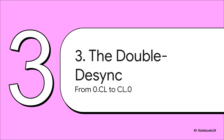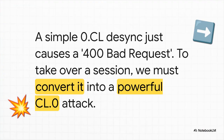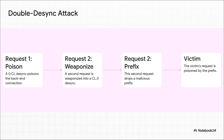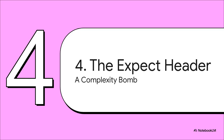Now we can actually trigger a 0.CL desync and we've got our proof of concept. But how do we make it do something evil? How do we go from just breaking things to actually hijacking a victim's session? Getting a 400 bad request is great for a report, but it's not a takeover. To do real damage, you need to inject your own malicious prefix into someone else's request. We need to convert our 0.CL desync into the far more powerful CL.0 desync. The answer is a two-stage attack called a double desync. First, you fire off your 0.CL request with that early response gadget to poison the connection. Then, right on its heels, you send a second different request. Because the connection is already in that poisoned state, the second request can pull off a classic CL.0 attack, dropping your malicious payload right onto the socket, waiting for the next victim.